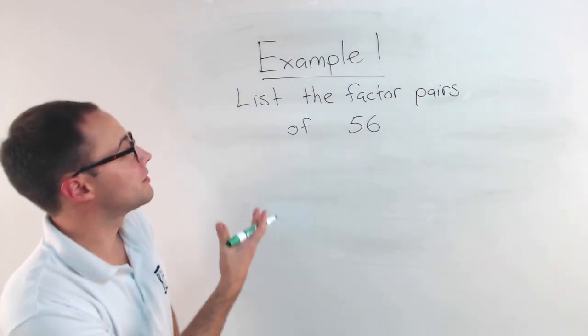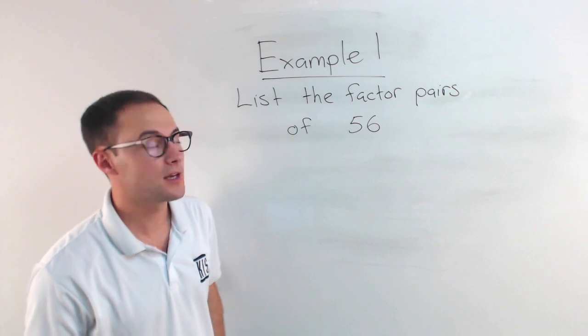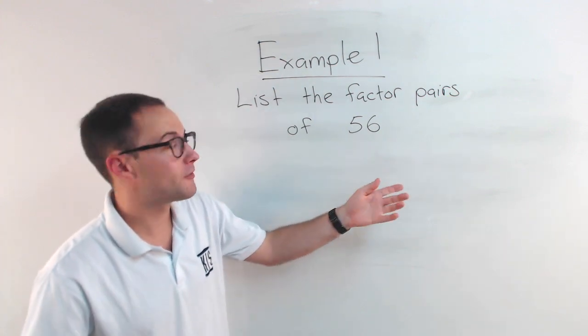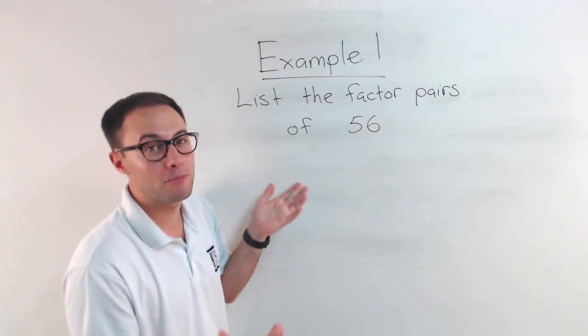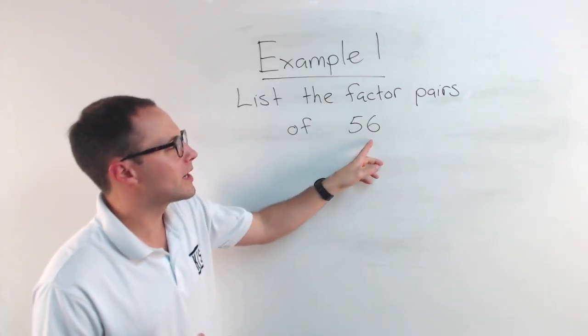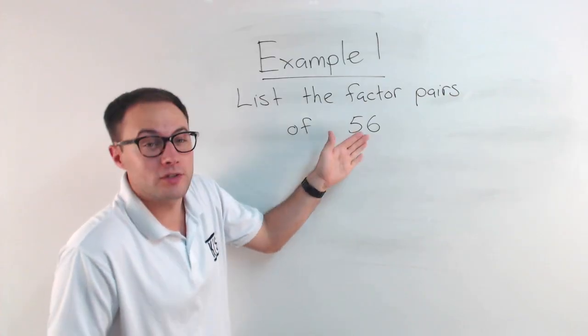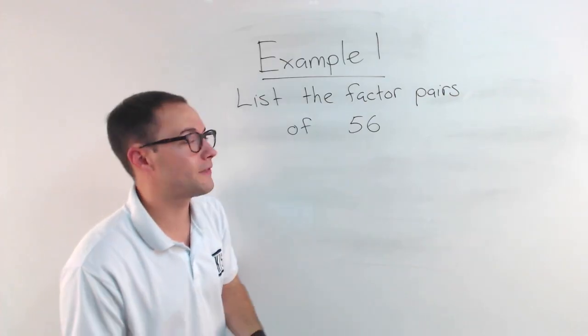Let's try an example with factor pairs. Example one, list the factor pairs of 56. Factor pairs, all you're looking for are factors, and we're writing them in pairs. Remember factors, you can think of, well, what numbers is 56 divisible by? What number goes into 56 evenly? Those are your factors.